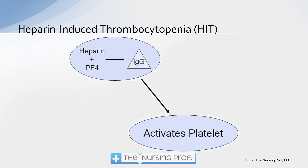An important consideration with heparin is the possibility that a patient could develop heparin-induced thrombocytopenia (HIT). Heparin combines with PF4, which is an antibody that develops an IgG complex that activates platelets. As a result, platelets are consumed — leading to thrombocytopenia through this heparin-mediated immune complex activating the platelets. We should be concerned about HIT if a patient on heparin shows approximately a 30% decrease in platelet count.